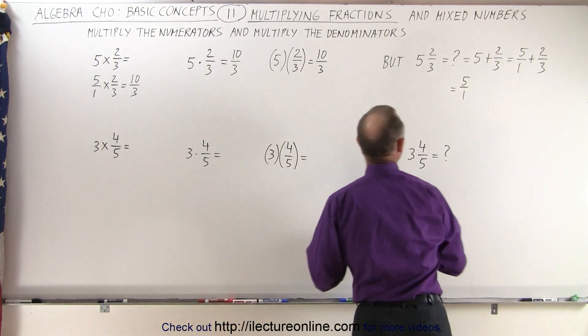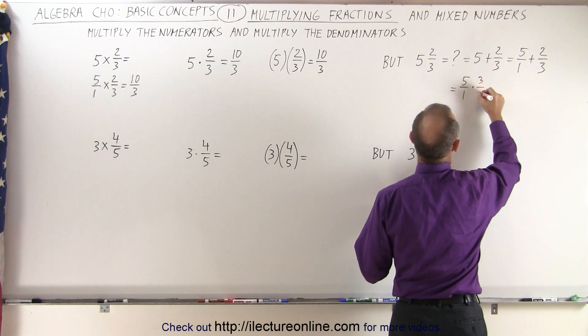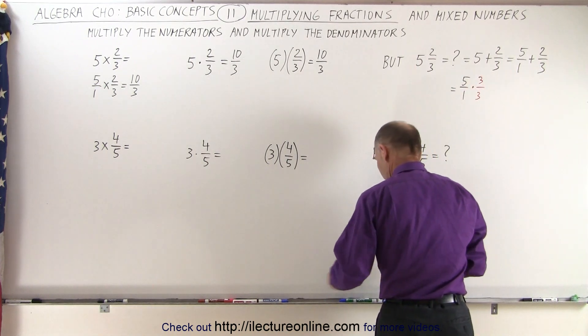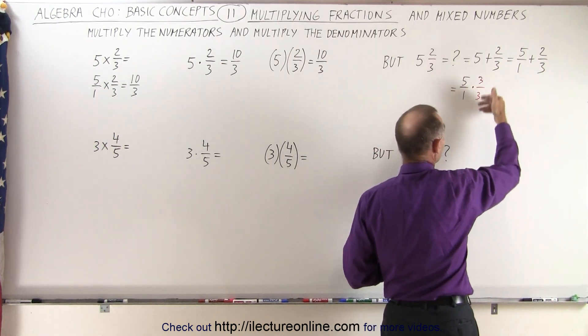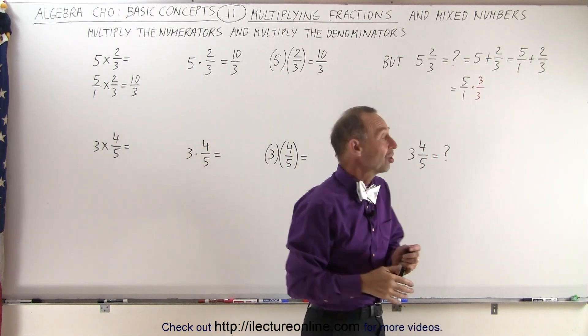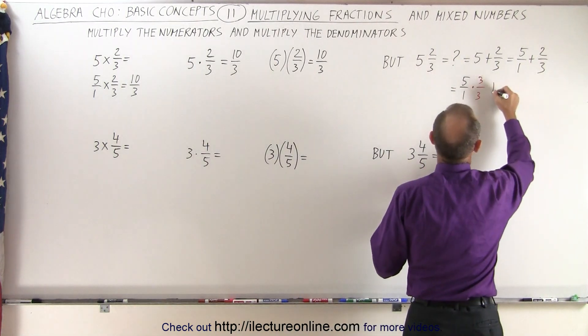So what we're going to do, we're going to say well this is equal to 5 over 1, and we're going to multiply both the numerator and the denominator by 3. If we multiply the numerator and denominator by the same number, we haven't changed anything, and then we add that to 2 thirds.